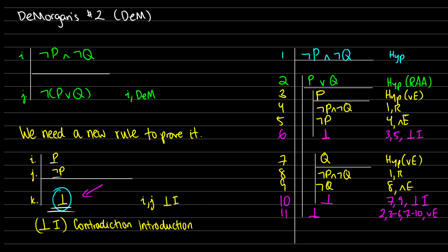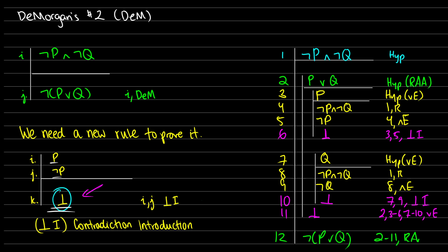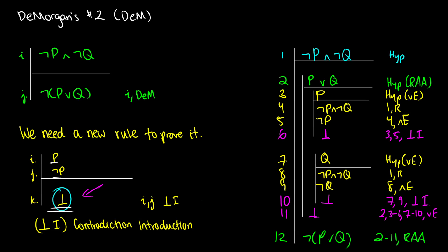At this point, we have p or q leading to a contradiction. So therefore our assumption p or q cannot be correct. In line twelve, we know we have not (p or q), and that was a proof by RAA — from two to eleven, RAA — and therefore we have concluded our proof. As you can see, we do need that contradiction introduction rule in the system for it to work, and we can use the contradiction from two to eleven to get the negation of two, which is not (p or q).